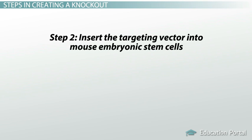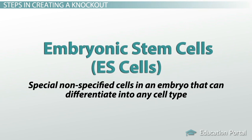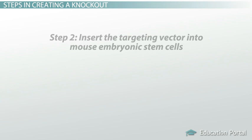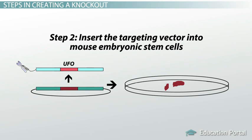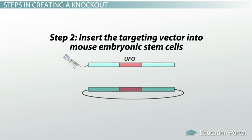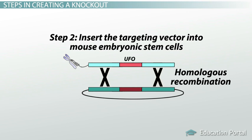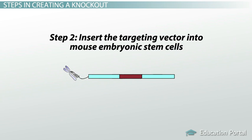Once we have our targeting vector, step two is to insert the targeting vector into mouse embryonic stem cells. Embryonic stem cells, or ES cells, are special non-specified cells in an embryo that can differentiate into any cell type. This is key because we are going to change the genotype of these stem cells — essentially removing a specific gene from them. When these cells grow, divide, and differentiate, all their daughter cells will also be missing our UFO gene. These ES cells are being grown in a Petri dish. Once we insert the targeting vector into ES cells, it will undergo homologous recombination with our target UFO gene. The same pieces of DNA will line up and recombine, giving us our reporter gene in place of the UFO gene. This will happen in some cells, but not all.